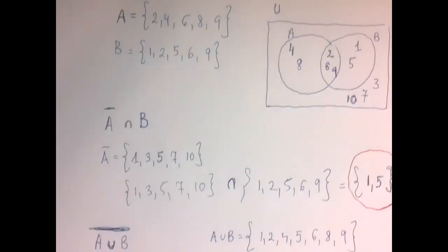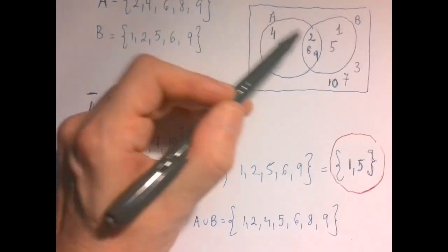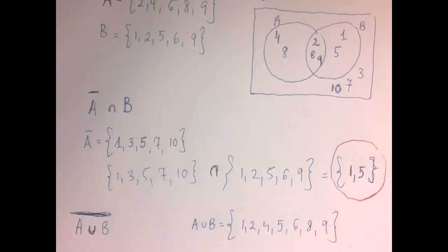A union B, we just need to throw together all these numbers into one set. So there is 1, 2, neither of them has 3, 4, 5, 6, no 7, 8, and 9. So visually, A union B is inside this double bubble, so it seems to be correct.